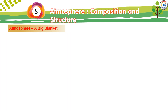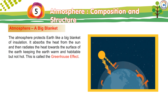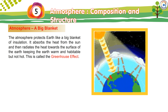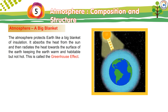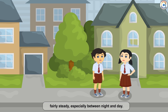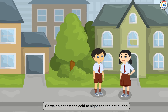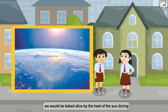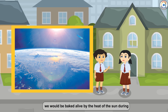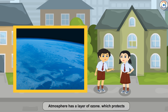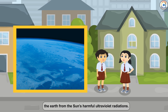The atmosphere protects Earth like a big blanket of insulation. It absorbs the heat from the sun and then radiates the heat towards the surface of the Earth, keeping the Earth warm and habitable but not hot. This is called the Greenhouse Effect. It also keeps the overall temperature of the Earth fairly steady, especially between night and day, so we do not get too cold at night and too hot during the day. Without this blanket of protection, we would be baked alive by the heat of the sun during the day and get frozen during the night. The atmosphere also has a layer of ozone which protects the Earth from the sun's harmful ultraviolet radiations.